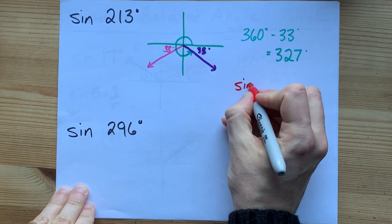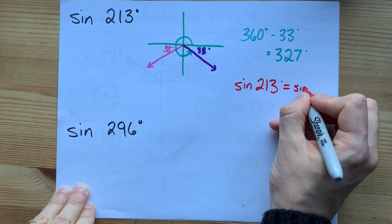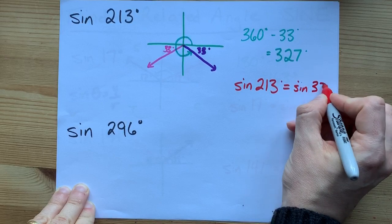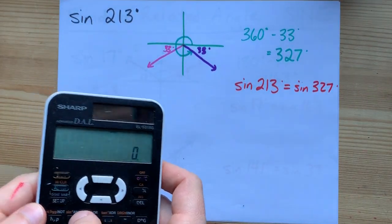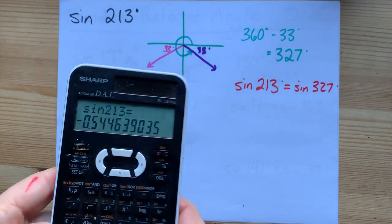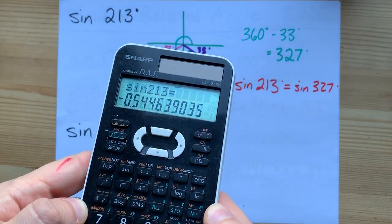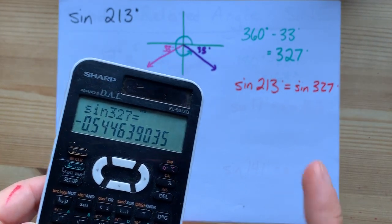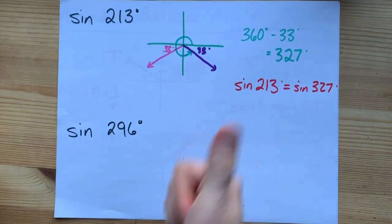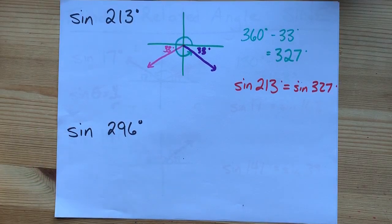Final answer: sine of 213 degrees is equal to the sine of 327 degrees. Check. Sine 213, negative 0.54. Sine 327, negative 0.54.